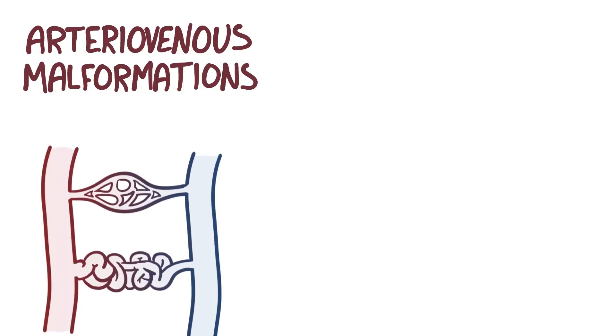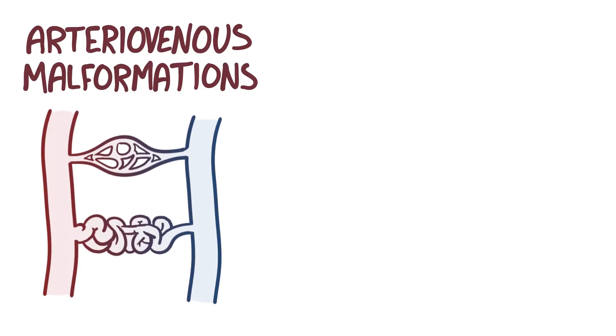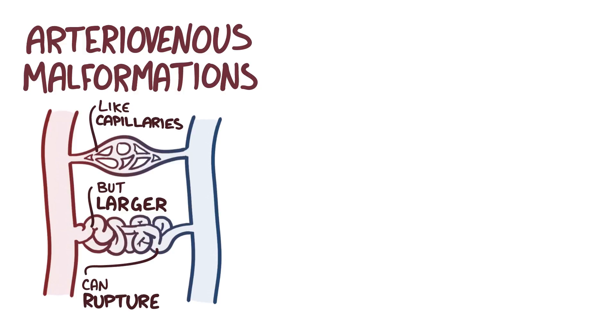Intracerebral hemorrhages are sometimes associated with arteriovenous malformations, which are a tangle of blood vessels that directly connect an artery to a vein — a bit like a capillary bed, but with much larger blood vessels. Over time, these abnormal vessels can rupture, causing a hemorrhagic stroke.